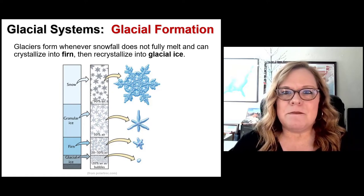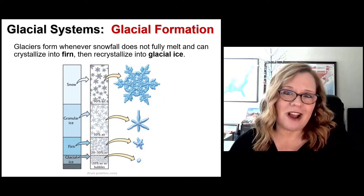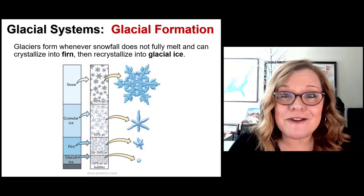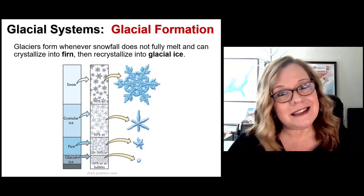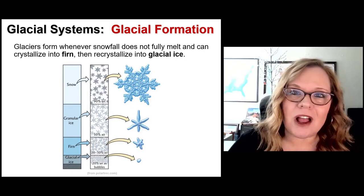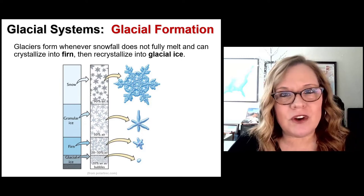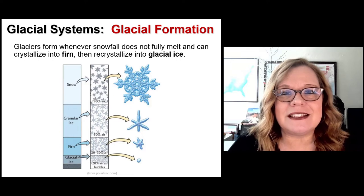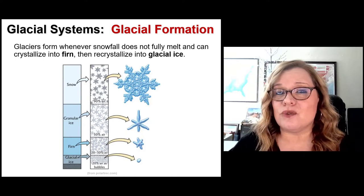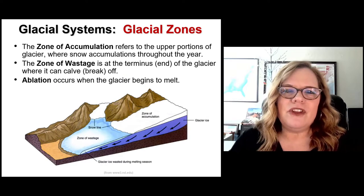Glaciers form whenever snowfall does not fully melt each season — but it's not just because snow falls. It crystallizes into firn and then recrystallizes into glacial ice through a multi-step process. Two really important requirements to form glaciers: you need a wet enough environment and a cool enough environment — not necessarily cold, just cool enough that you don't melt all the seasonal snow. It changes from snow to granular ice, then to firn (f-i-r-n), then recrystallizes into compacted glacial ice.